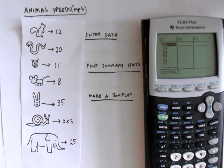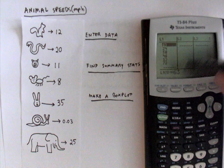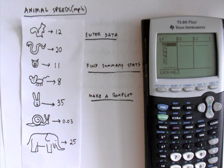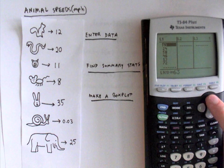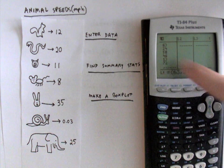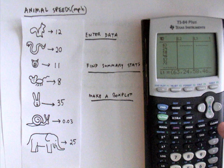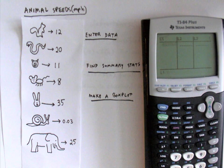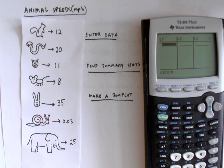When you come into the list editor there may or may not be data in there already. It looks like I might have last year's final exam score still in there, so we want to clear that out. And the way you clear a list is just press the up arrow to get to the top of the list. You can see L1 is highlighted there, and we want to hit clear and enter. You don't want to hit delete to clear a list. If you hit delete to clear a list it actually deletes the entire list.